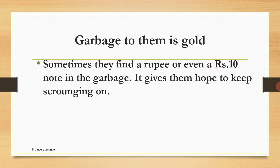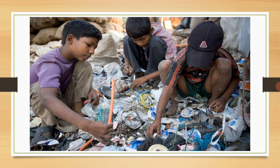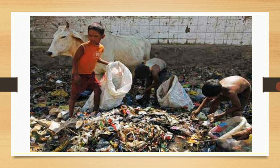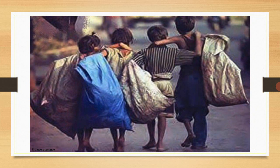This is a slum area of Simapuri — garbage to them is gold. Sometimes they find a rupee or even a 10-rupee note in the garbage, which gives them hope to keep scrounging on. We can see children scrounging for something valuable — like gold, like money, like coins. Here there is coexistence with the animals — small kids scrounging for some kind of treasure to sell and buy food, with a cow standing along with them. This shows that the children are used to coexisting with animals. It is a pitiable picture showing children taking bags on their very delicate shoulders.